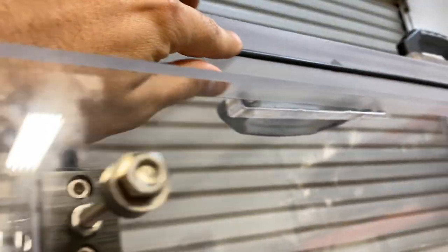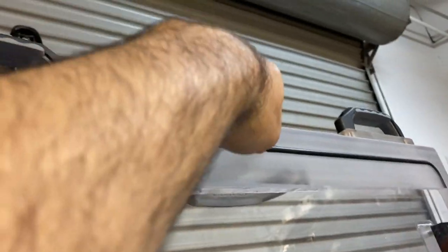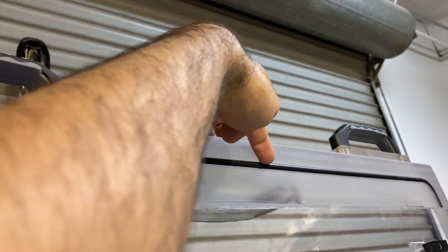And then the way you get it out is that there's a little notch here, you take your screwdriver and you press it in and then you can pop out this o-ring.